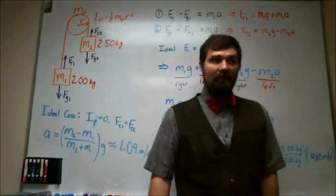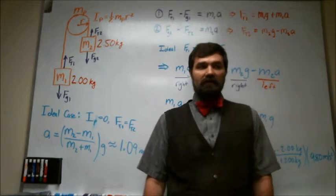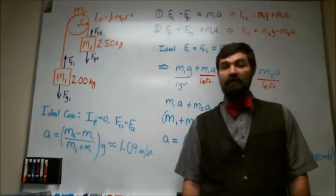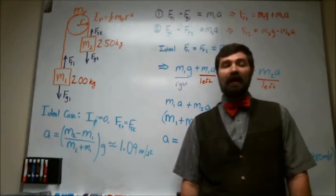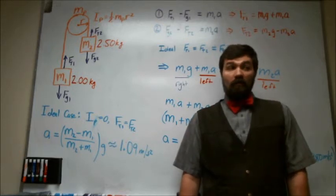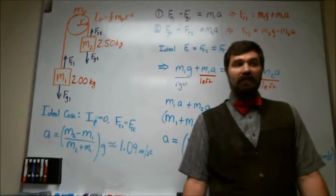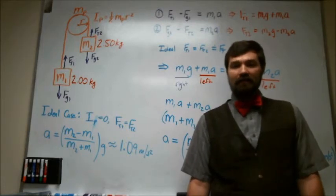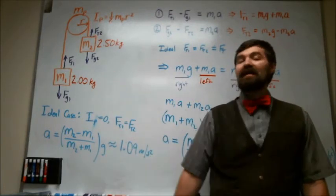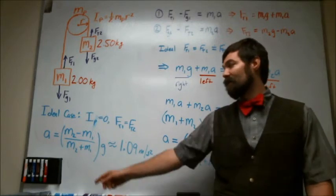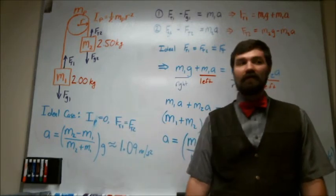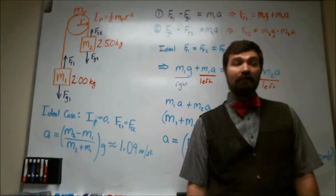Okay, so that basically gets us the result for an ideal Atwood's machine. What I want to do next, basically in the next video, is look at what happens if we include the mass and therefore we have a non-zero moment of inertia for the pulley.